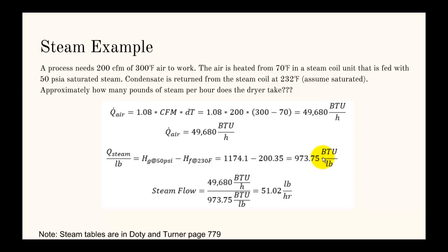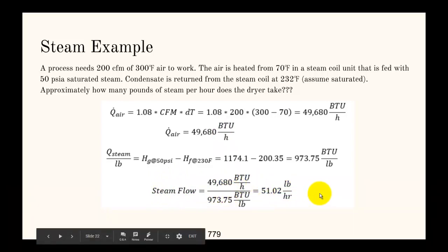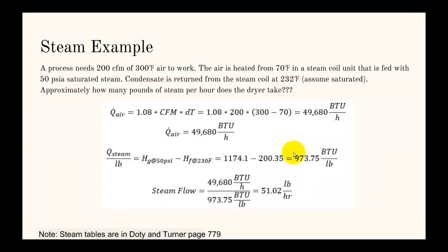You know you can deliver this many BTUs per pound, and you need this many BTUs per hour. So you look for the steam flow in pounds per hour, and you basically divide those two numbers. You get about 50 pounds an hour. The idea is you need to figure out how much heat you need, how much heat you can deliver per pound with steam, and then you figure out the steam flow there.